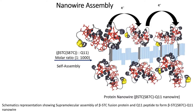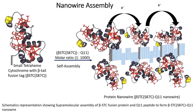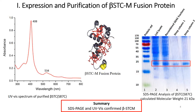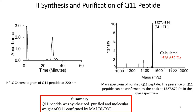These nanowires, as you can see from the slide, are made up of two major components: the fusion protein called the small tetraheme cytochrome and the fibrillating peptide called the Q11. I express and purify the fusion protein, as you can see from the results on the slide, and I also synthesize and purify the Q11, as you can see from the slides shown.